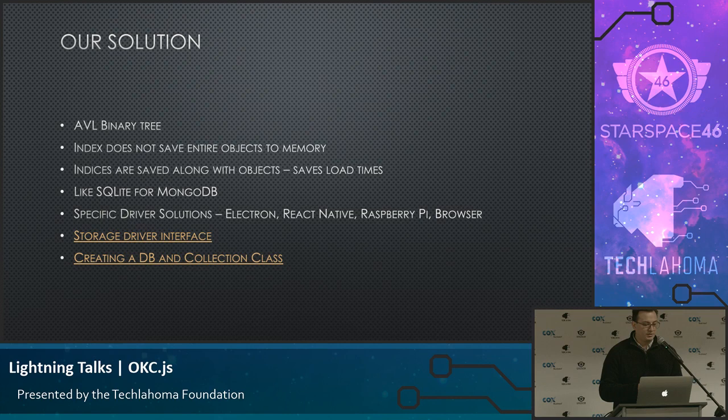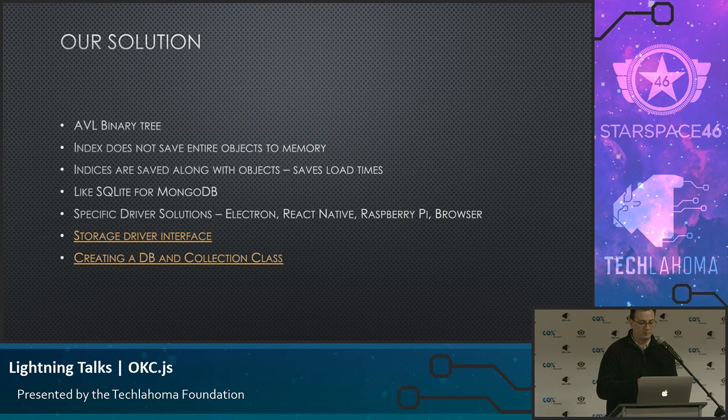Our AVL binary tree does not hold the objects in memory — they just hold the keys to the objects. So you can actually save the entire index to memory. Instead of having to read all the objects every time you load up a database, then index them, we save the whole index into a JSON file. Then you load it up and it takes a millisecond.